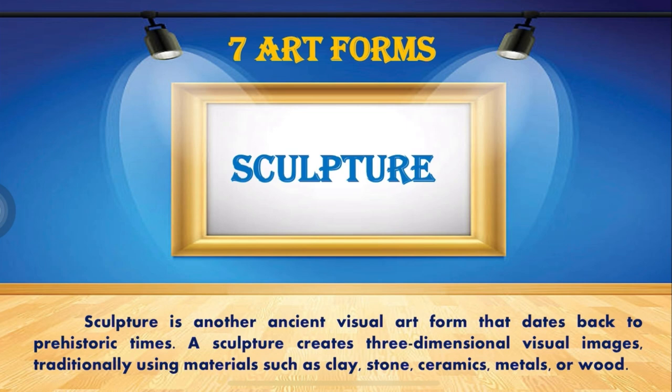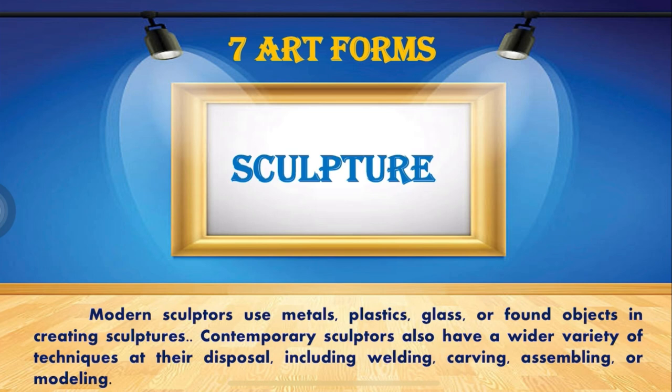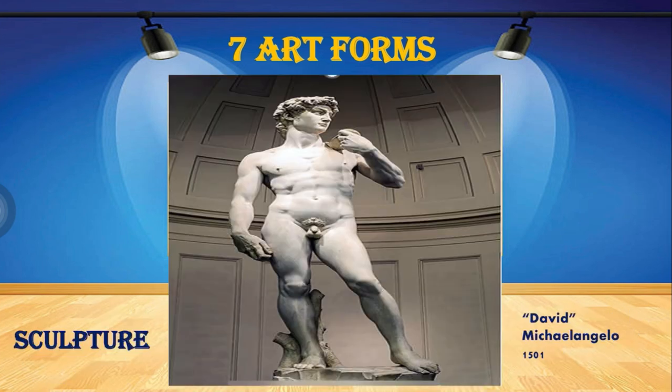Traditionally, sculptors use materials such as clay, stone, ceramics, metals, or wood. Modern sculptors use metals, plastics, glass, or found objects. Contemporary sculptures also have a wider variety of techniques at their disposal, including welding, carving, assembling, or modeling. An example is David by Michelangelo, made in 1501.